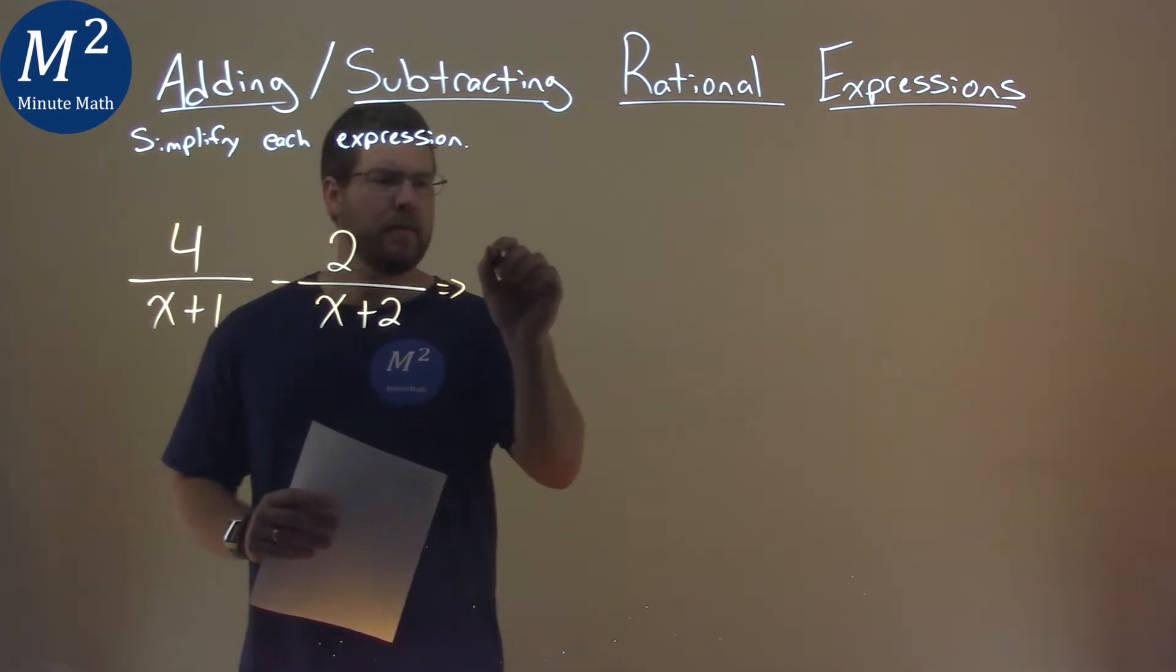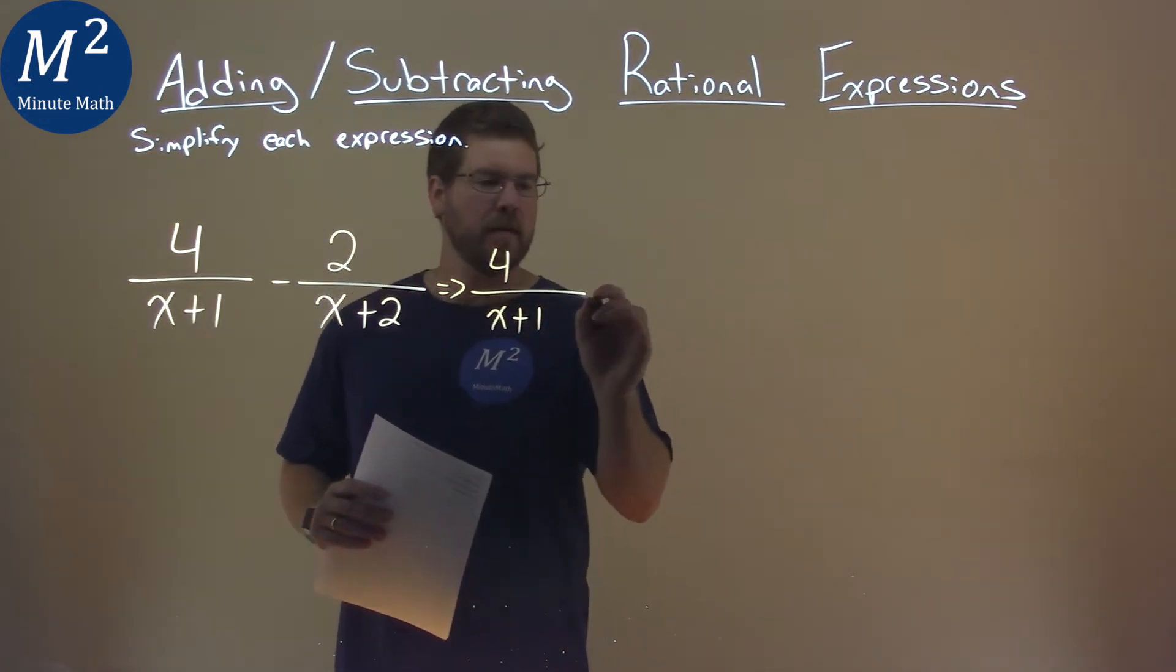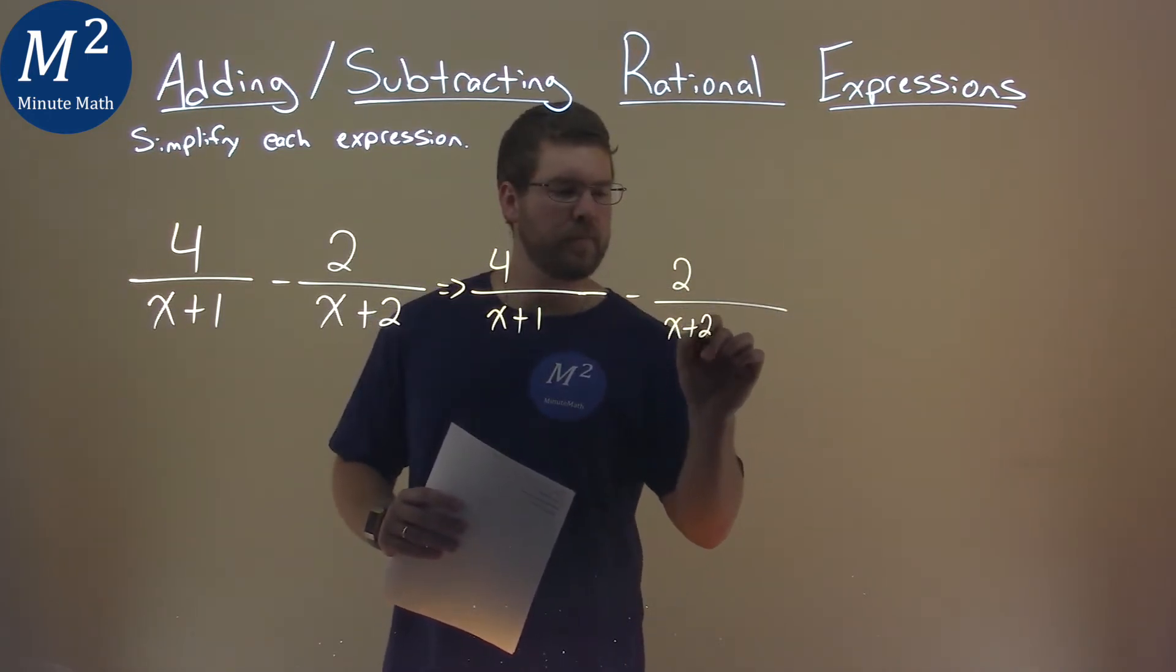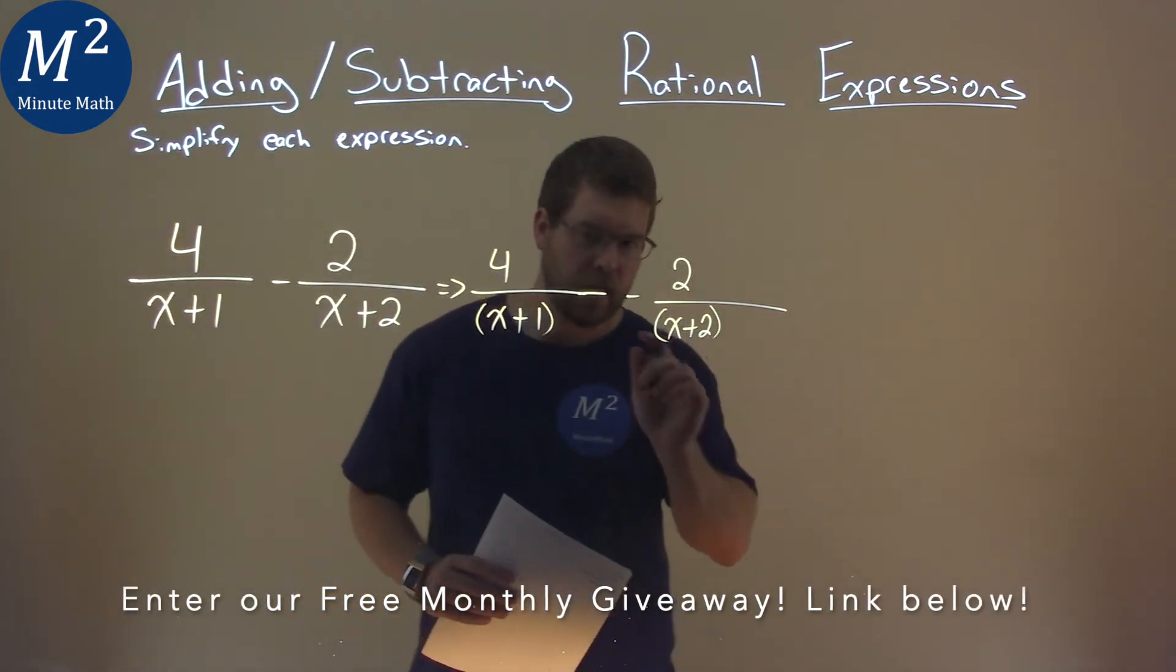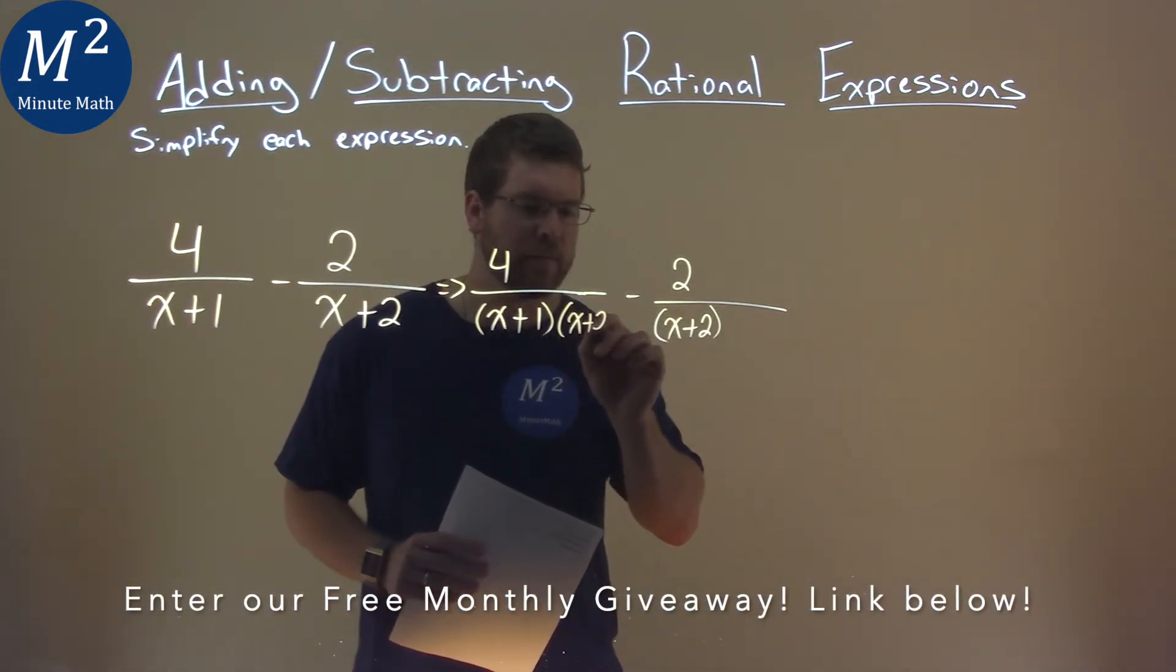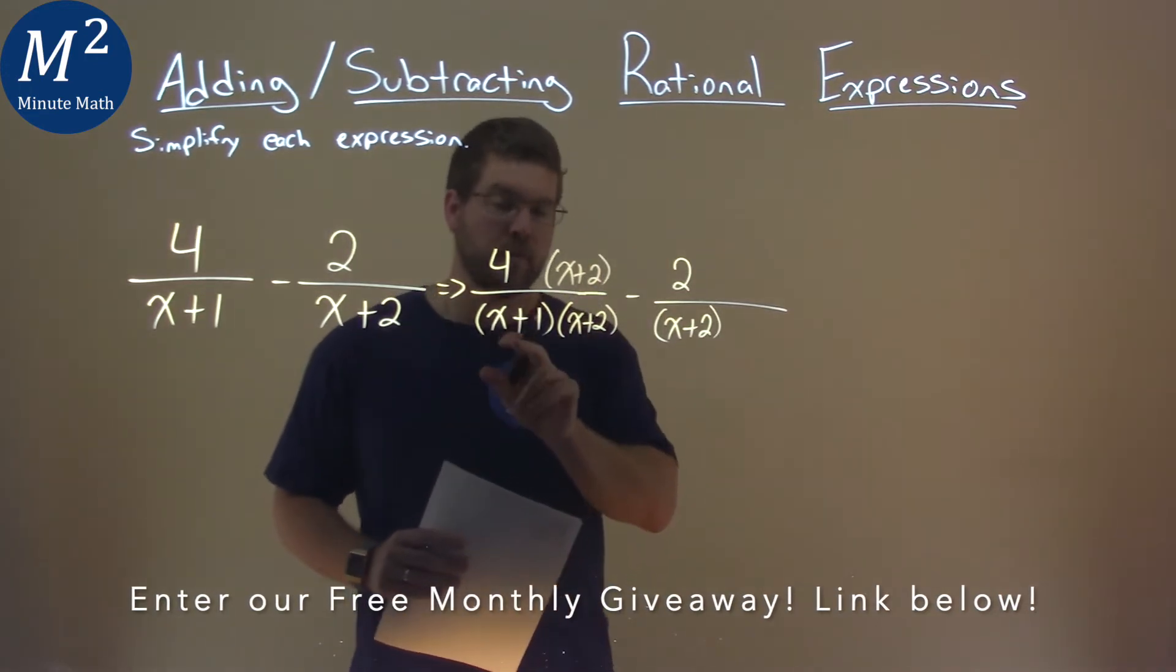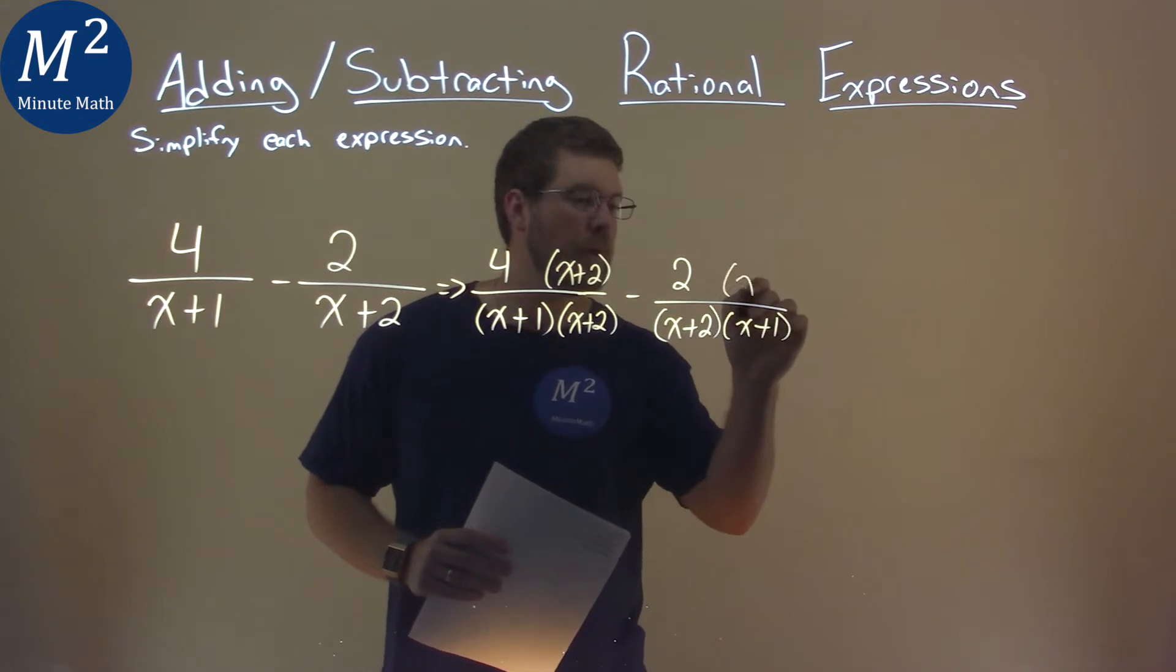So with that, I have my 4 over x plus 1, then I'm going to give some space, minus 2 over x plus 2. But I'm going to take this denominator of the x plus 2 and multiply it here, and I put it over itself. Same with this x plus 1 on this side, x plus 1, x plus 1.